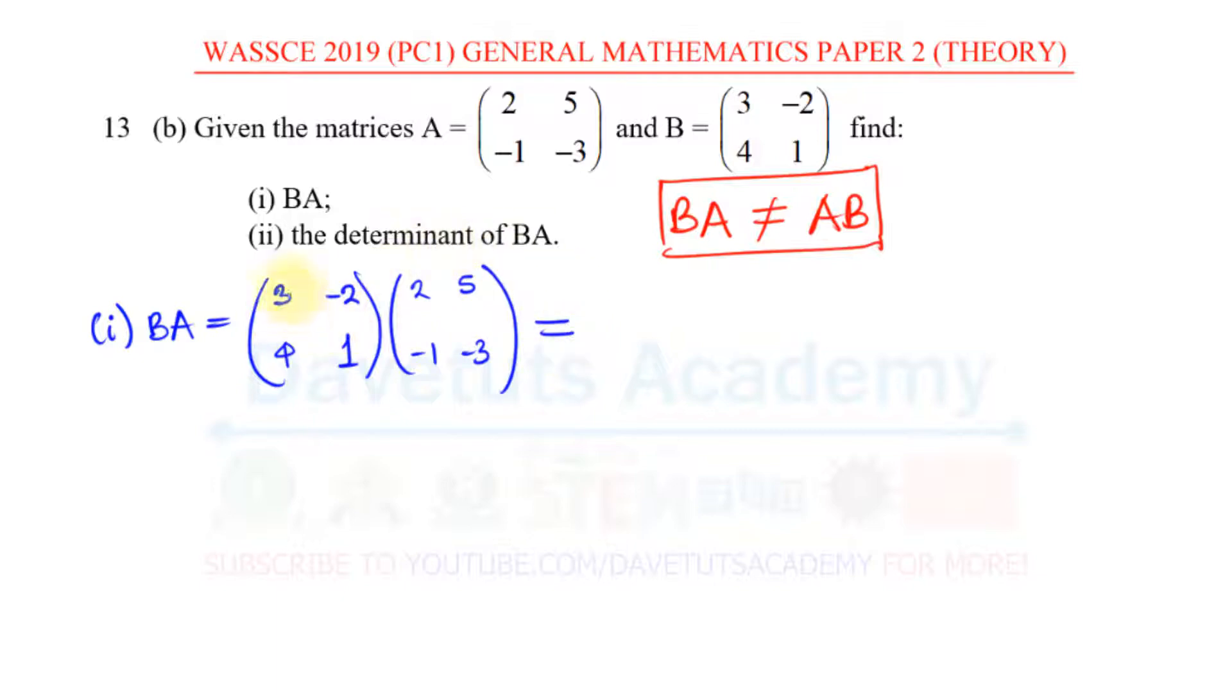So how do we evaluate this product? What we do is that first, we take this first row and use it to multiply this column and after that we use it to multiply this column. And then we also take the second row and use it to multiply this column and then use it to multiply this column. We are going to carry that out now and you will see for yourself. And confirming that we got the order correctly, it is BA, not AB.